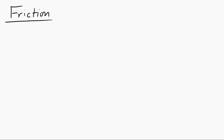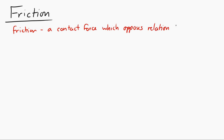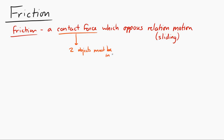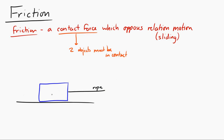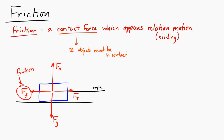Friction is a contact force which opposes relative or sliding motion. Two objects have to be in contact for friction to exist. If we draw a diagram where a box is being pulled to the right by a rope, the forces present would be weight downward, normal force upward, tension force to the right, and friction force to the left — opposing the sliding motion of the box.